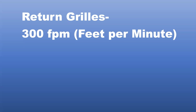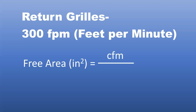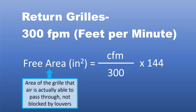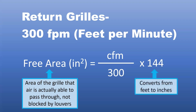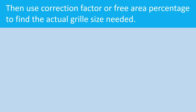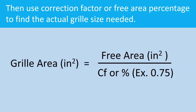This is so homeowners don't hear the air rushing into the grill. Keeping a lower velocity also helps keep the pressure down on the return side of the system. Using this, we have the equation: free area equals CFM divided by 300 feet per minute, times 144. The free area is the area of the grill that the air is actually able to pass through — not what's blocked by louvers or the edges — and the 144 converts our answer from square feet to square inches, which is helpful since grill dimensions are given in inches. Then, to find the actual nominal grill area, we take the free area we just calculated and divide it by the correction factor, or free area percentage — the percentage of the total grill area that is free area — which is usually provided by the manufacturer for their specific grills.